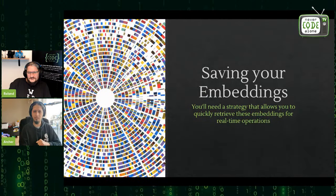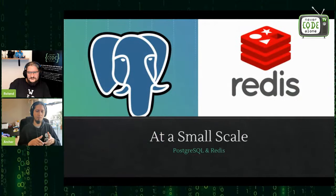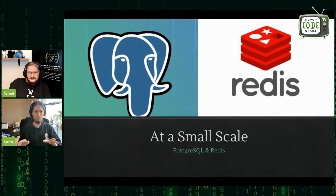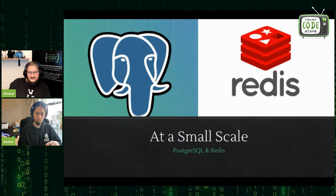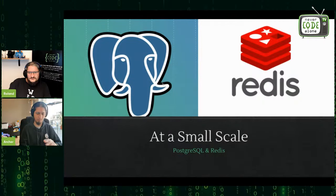For saving your embeddings: for a couple of hundred items, you can save them to Redis and compare in memory with no problem. But you can also go a step further and use pgvector - I'm going to show you a pgvector installation today. It's extremely simple. And I think we've covered everything in the presentation itself; now we can start going over the code - the fun part.